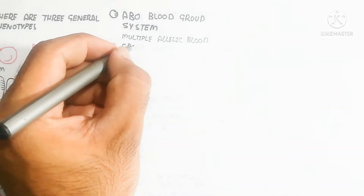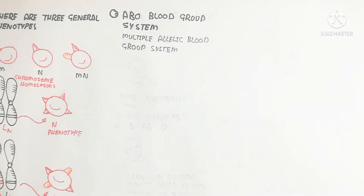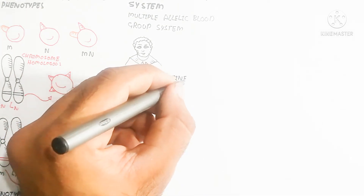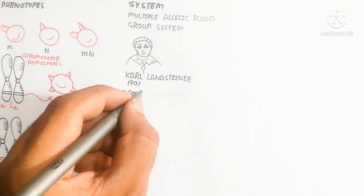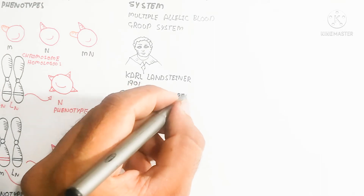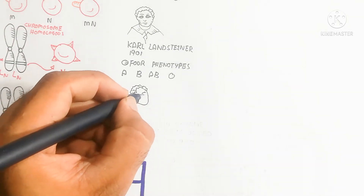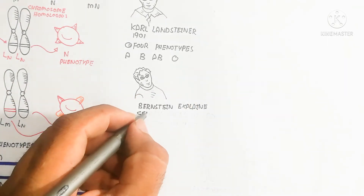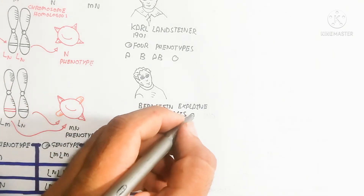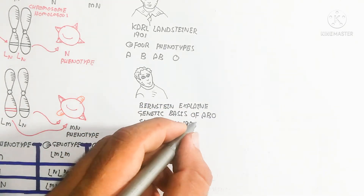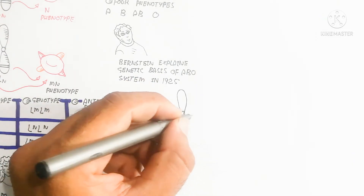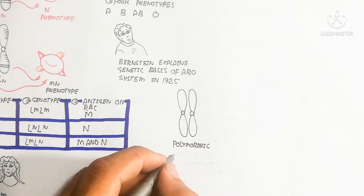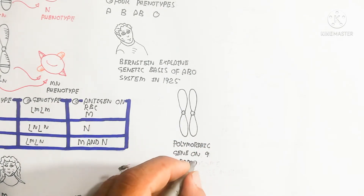The ABO blood group system is a multiple allelic blood group system, first introduced by Karl Landsteiner in 1901. Four phenotypes can be classified. Bernstein explained the genetic basis of the ABO blood system in 1925. The four phenotypes are based on A antigen, B antigen, AB antigen, and O — where O means the lack of antigen.